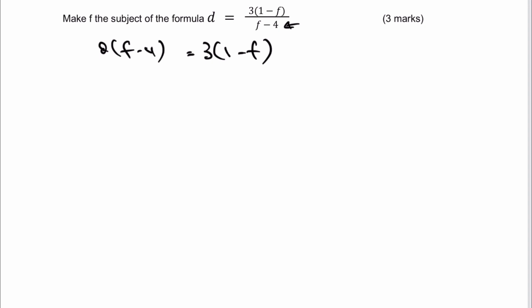Okay, so let's now expand these brackets. I'm going to get df minus 4d equals 3 minus 3f.